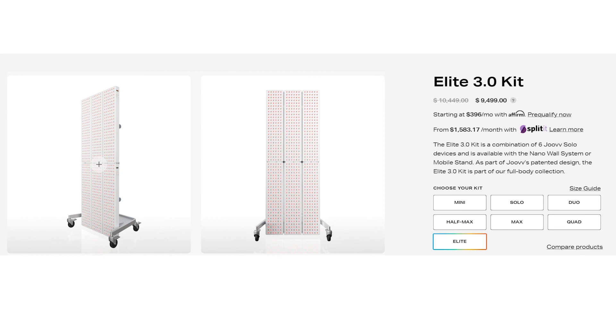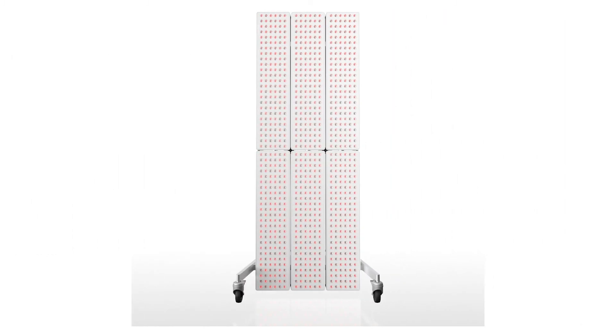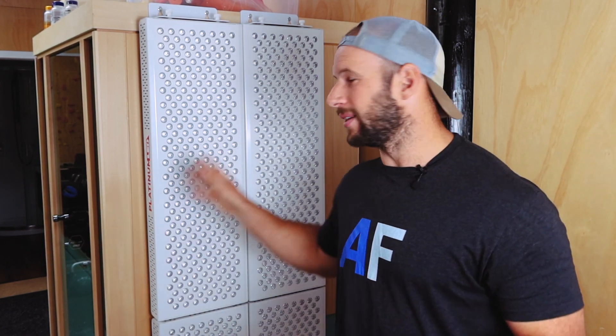How does this Biomax 900 quad compare to its competitors? Well, if you look at Juve, you've got to compare it with the Juve Elite. They're around $9,000, $10,000. And there's a lot of downsides with the Juve: EMF issues, not as much power, only two wavelengths. But most importantly, it's more than double this price.